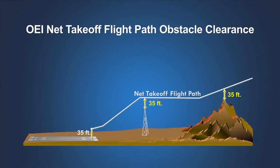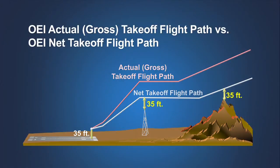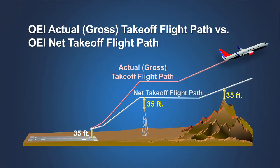Clearing an obstacle by 35 feet doesn't sound like much of a safety margin, but remember that the net takeoff flight path is defined as the actual gross flight path minus the prescribed reduction in performance. The intent is to provide a reasonable safety margin should the airplane's climb performance following an engine failure be less than predicted. These differences are due to operational variations that can reasonably be expected in gross weight, thrust, airplane drag, pilot technique, wind effects, and so on. However, except during the level flight segment, there will be an increasing margin of obstacle clearance between the actual takeoff flight path and the net takeoff flight path used to assess the required obstacle clearance.